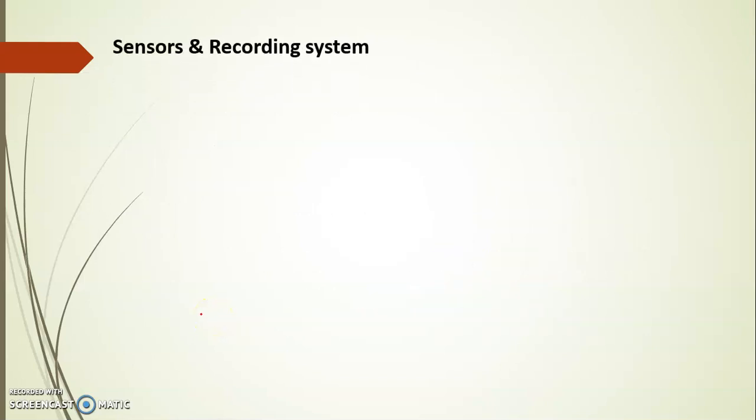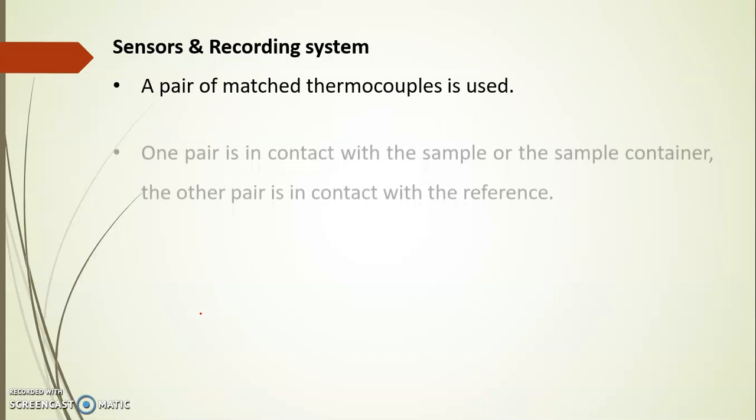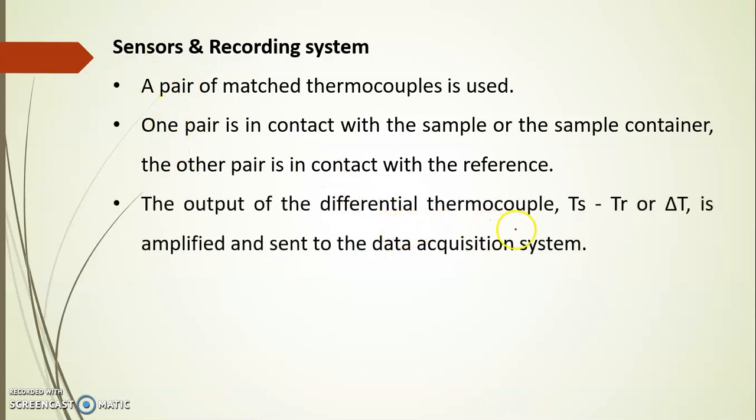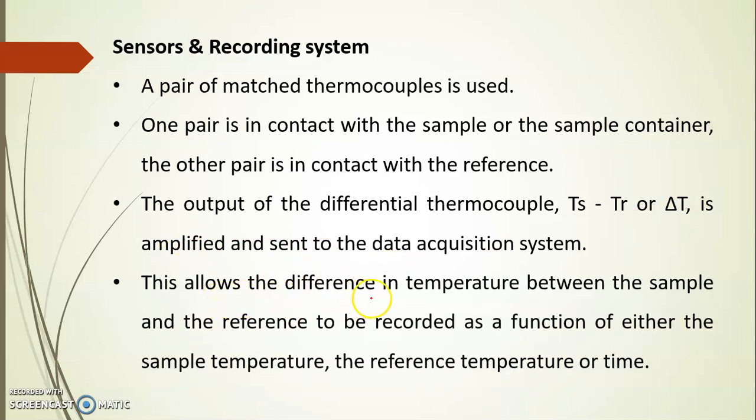Next part of the instrument is sensors and recording system. A pair of matched thermocouples is used. One pair is connected or contacted with the sample or the sample container and another pair is with the reference container. The output of the differential temperature, it is denoted by Ts for sample temperature or Tr for reference temperature or differential temperature delta T. It is amplified and sent to the data acquisition system. This allows the difference in temperature between the sample and the reference to be recorded as a function of either the sample temperature, the reference temperature or time.